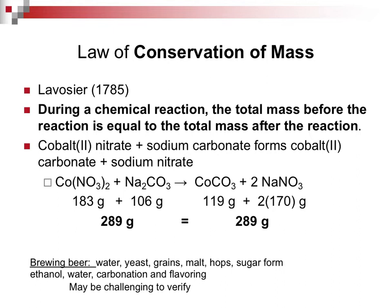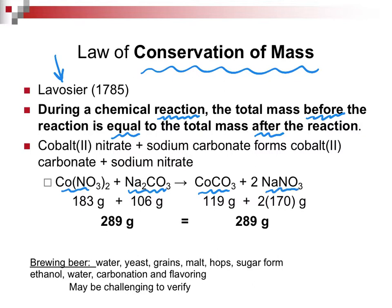The third law is the easiest: conservation of mass, proposed by Lavoisier, who lost his head on the guillotine in 1785. It states that whatever mass you have before a chemical reaction must equal the mass after. For example, cobalt nitrate reacts with sodium carbonate to form cobalt carbonate and sodium nitrate, and using atomic masses from the periodic table, the grams before and after are equal.